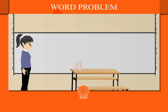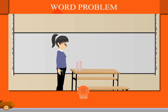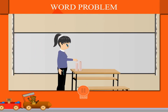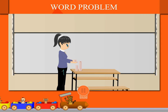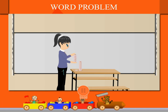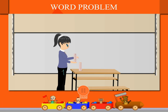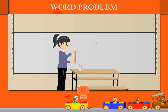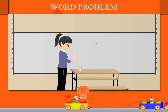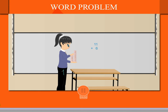Teacher Nancy stands in class with bangles arranged in two columns, one on top of the other. She counts and collects 11 bangles in her palm, then picks up 6 more bangles to make 11 plus 6 equal to 17 bangles on her palm.